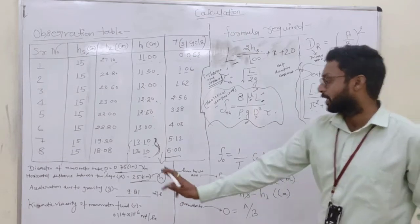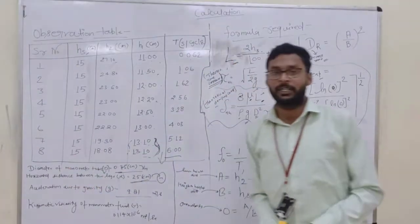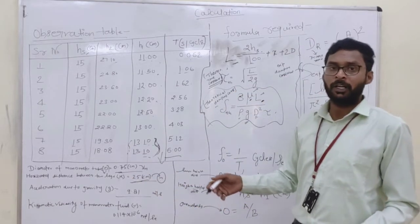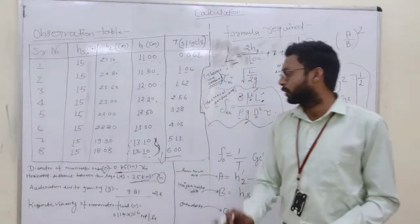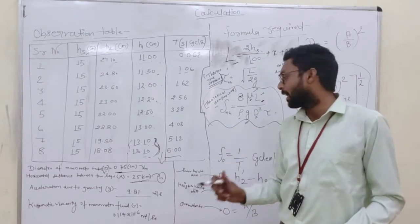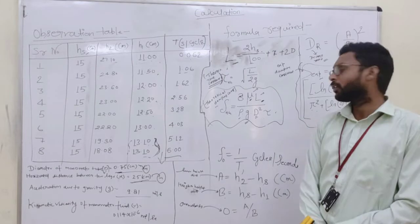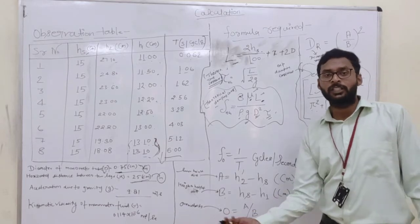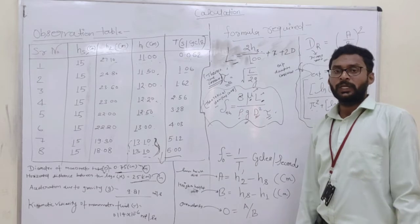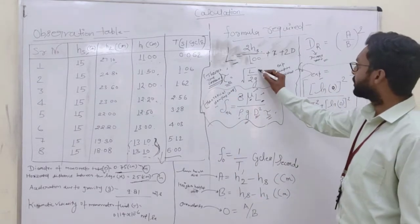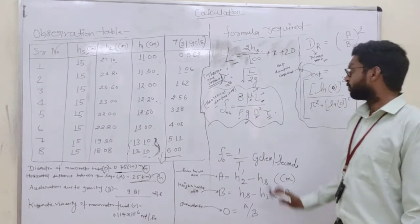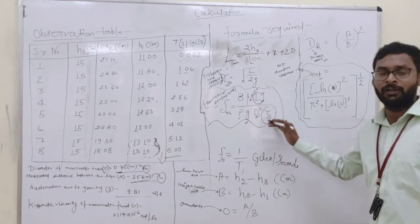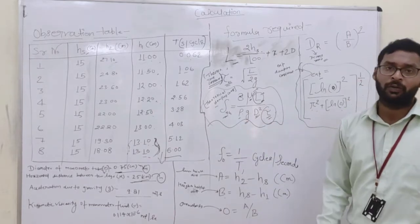D is the diameter of the manometer. In my laboratory, the diameter of the tube is 0.07 centimeters, which I will convert to meters for calculations. Tau is the theoretical time constant. To find the theoretical time constant, I have an equation: Tau_TH = sqrt(L / 2g). There are only two unknowns: L and tau. We will first find L, then find tau.